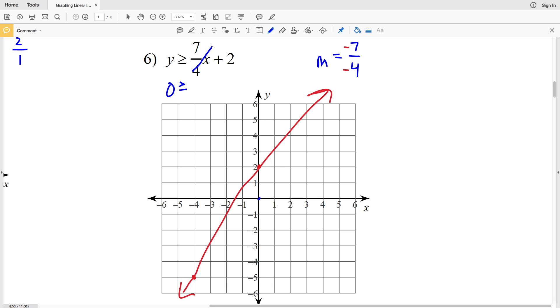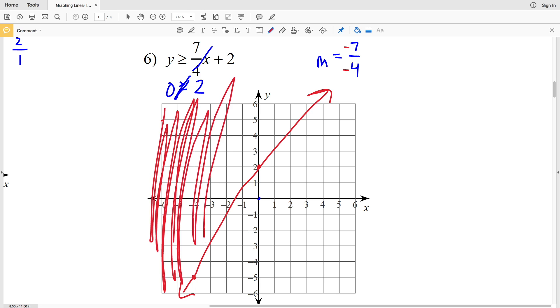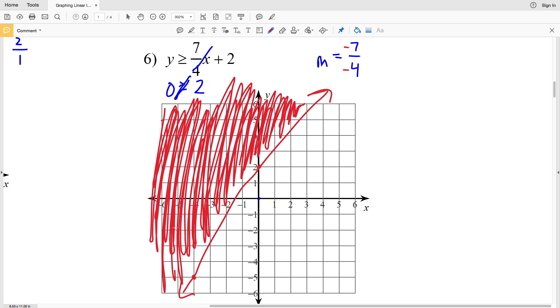Let's use (0, 0) and see if that is true for this inequality. Plugging 0 in for y and 0 in for x, that'll just become 0 and we have that 0 is greater than or equal to 2, which we know is not true. Therefore we're not going to shade in including the (0, 0), we're going to shade in the other side since our test point is not included in the shaded region.